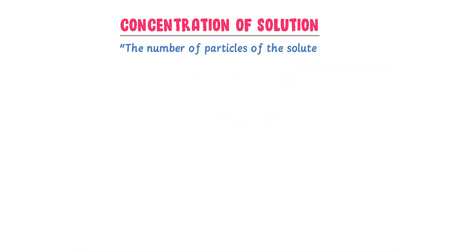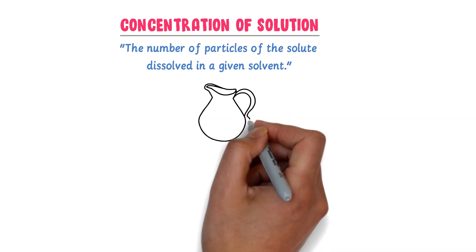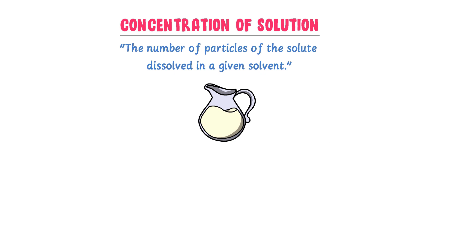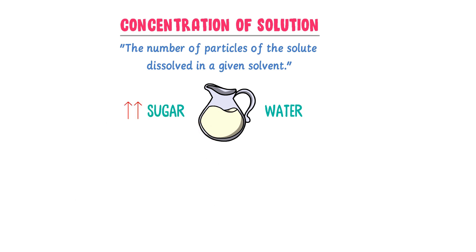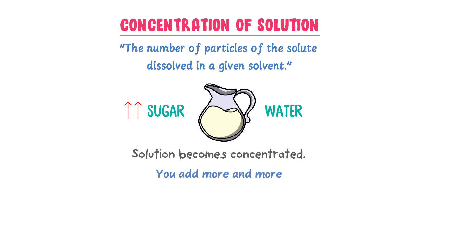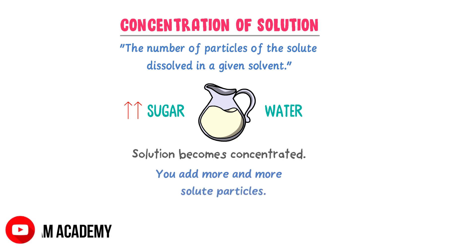The number of particles of the solute dissolved in a given solvent is called concentration of a solution. For example, consider sugar and water — sugar is a solute and water is a solvent. If you add more and more sugar to the water, the sugar solution becomes more and more concentrated, because you are adding more particles of solute, hence increasing the concentration of the sugar solution.